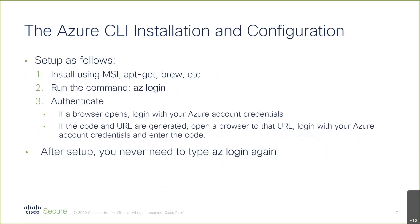Azure CLI is very easy to install — you install it by whatever method depending on Linux, Windows, or Mac. Then you type AZ login. If you're on Windows, it's going to automatically open a browser and you'll log in to your Azure account, and it will immediately set up the authentication. If you're running a remote session to a Linux box, it will generate a key and show you a URL. You go to that URL, log in to your Azure account, and type in that key — and that's sufficient to make the connection. After you've done this, the Azure CLI has learned your credentials and you never have to type AZ login again; you can just start doing your Azure commands whenever you're on that system.